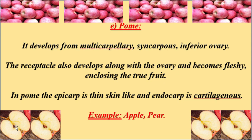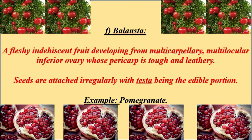The fifth type is pome. This fruit develops from a multicarpellary, syncarpous, inferior ovary. Syncarpous is a condition of fusion of carpels, and inferior ovary means the ovary is placed below the attachment of floral parts. The receptacle also develops along with the ovary and forms the fleshy fruit. The epicarp is a thin skin-like structure and the endocarp is cartilaginous. The receptacle forms the engrossed pulpy region. Examples: apple and pear.